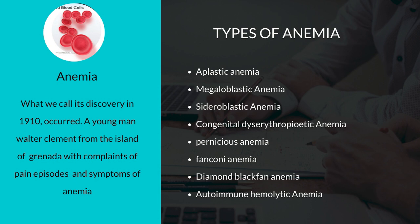Types of anemia. Anemia has almost 8 different types. Number 1, aplastic anemia. Number 2, megaloblastic anemia. Number 3, sideroblastic anemia. Number 4, congenital dyserythropoietic anemia. Number 5, pernicious anemia. Number 6, Fanconi anemia. Number 7, Diamond-Blackfan anemia. Number 8, autoimmune hemolytic anemia.